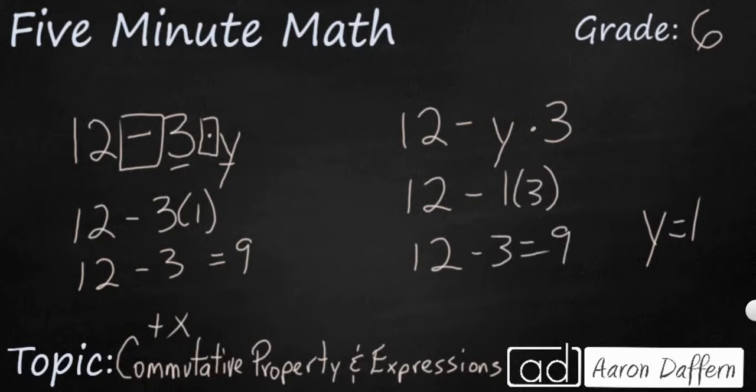So we can use the commutative property to generate equivalent expressions when we change the order of terms connected by addition or multiplication.